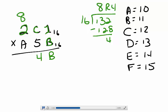Next, we multiply 2 times B, or 2 times 11, add the 8, that gives us 30. 16 divides into 30 one time with a remainder of 14, or E.